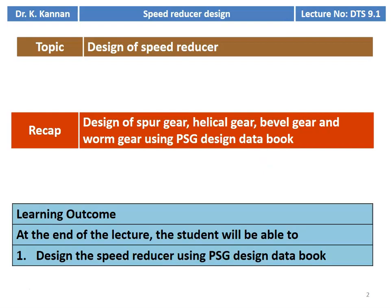We are going to discuss the design of speed reducer. In the earlier lecture, we discussed the design of spur gear, helical gear, bevel gear, and worm gear using the PSG design data book. We also solved problems in all four types of gears, including problems using the Lewis equation and Buckingham equation for calculating various parameters in gear drive.